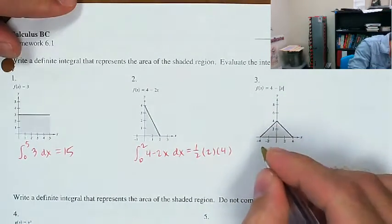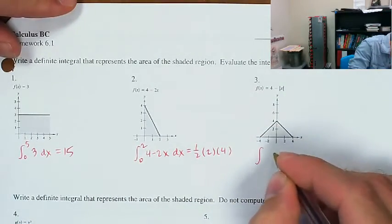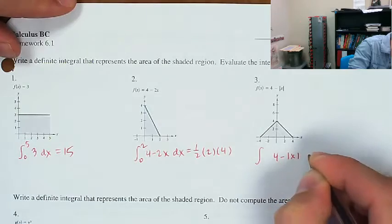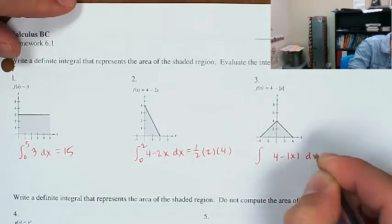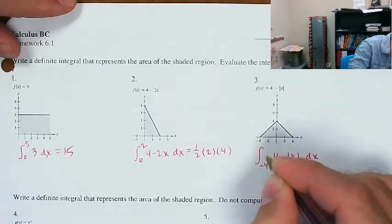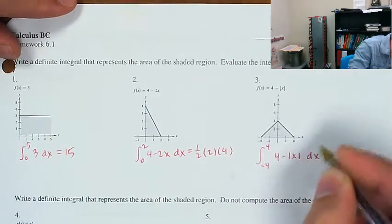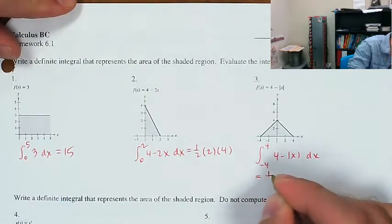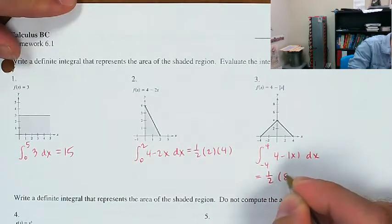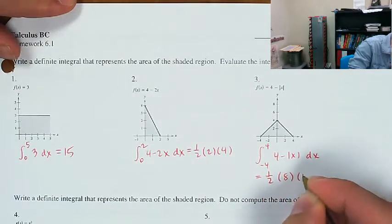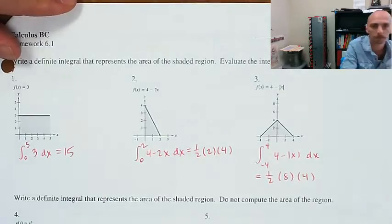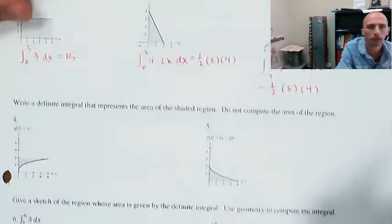This is going to be an integral of 4 minus the absolute value of x, as x runs from negative 4 to 4. And that's also a triangle, so it will be one-half times the length of the base times the height of the triangle.